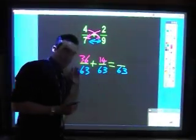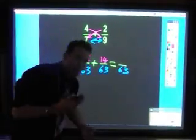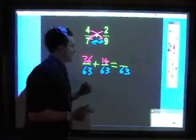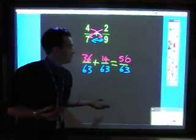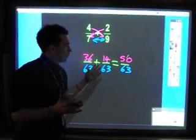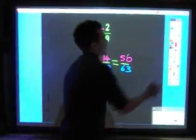And again, we've now got the denominators the same, which makes the question loads easier. 36 and 14, 50. 50 and 63. That's your answer. And again, not interested in simplifying because we're after the skill.